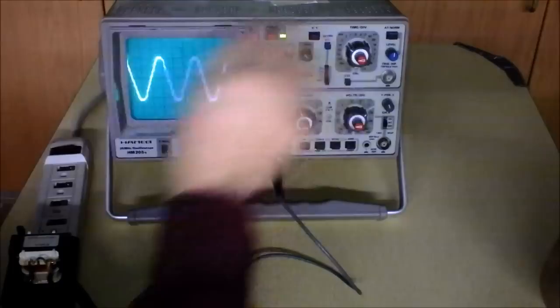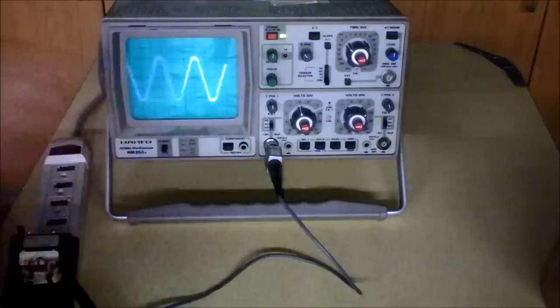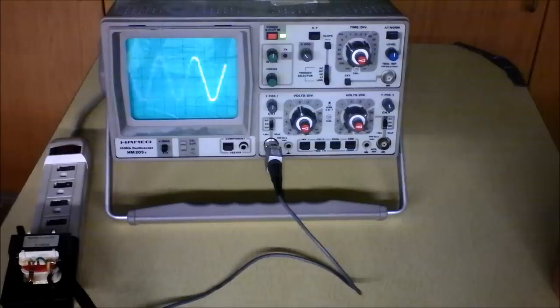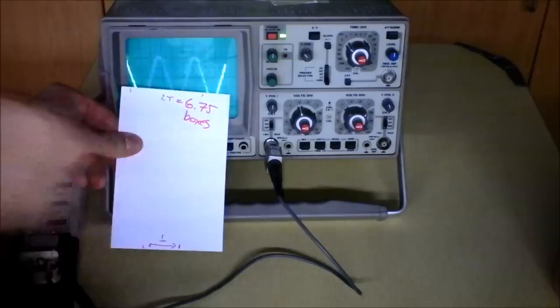Now we got one box, two boxes, three boxes, four boxes, five boxes, six boxes, six point what? Give me your best estimate of how many boxes that is. Seven, five. Two times the period is 6.75 boxes. See, I wrote that down for you. Two times the period is 6.75 boxes. Okay. So, one period, then, is how many boxes? Six point seven five divided by two? Yeah. Okay, and then I'm supposed to multiply that by how many volts per division?